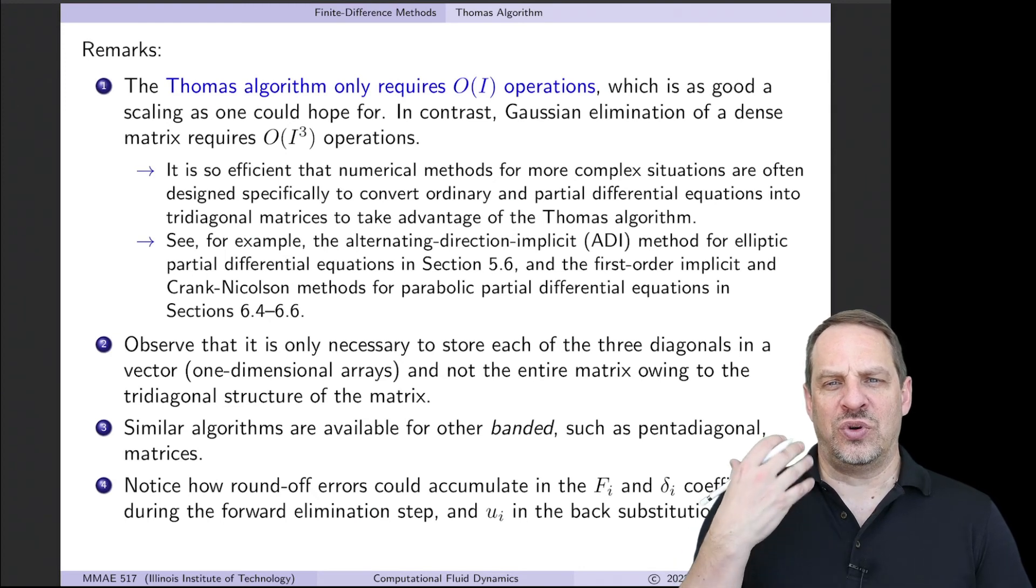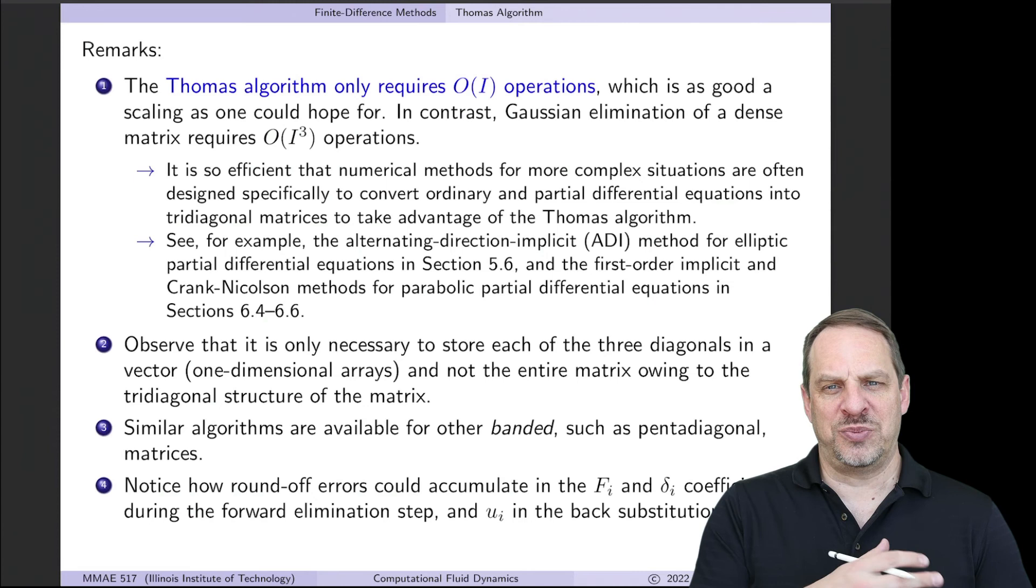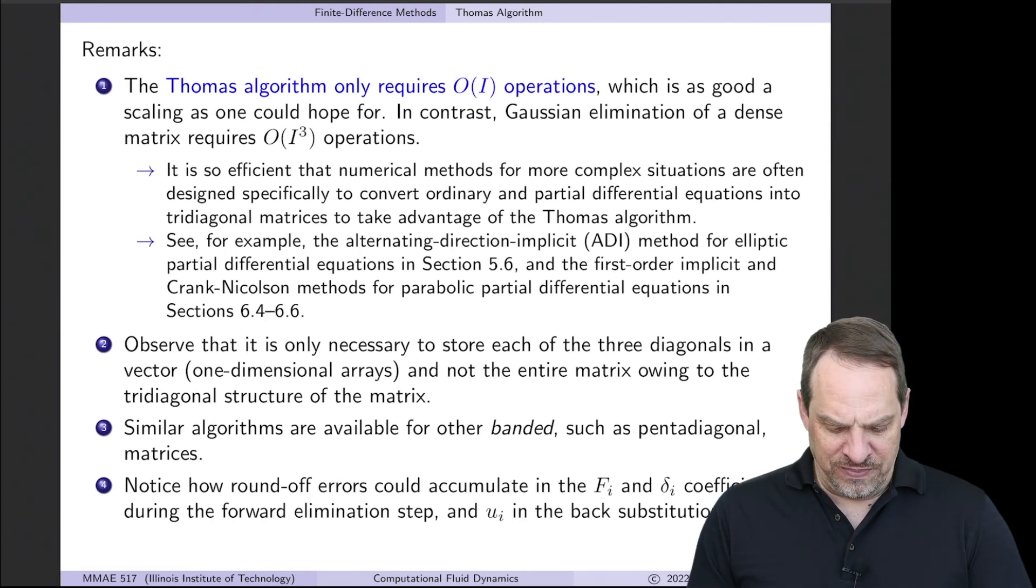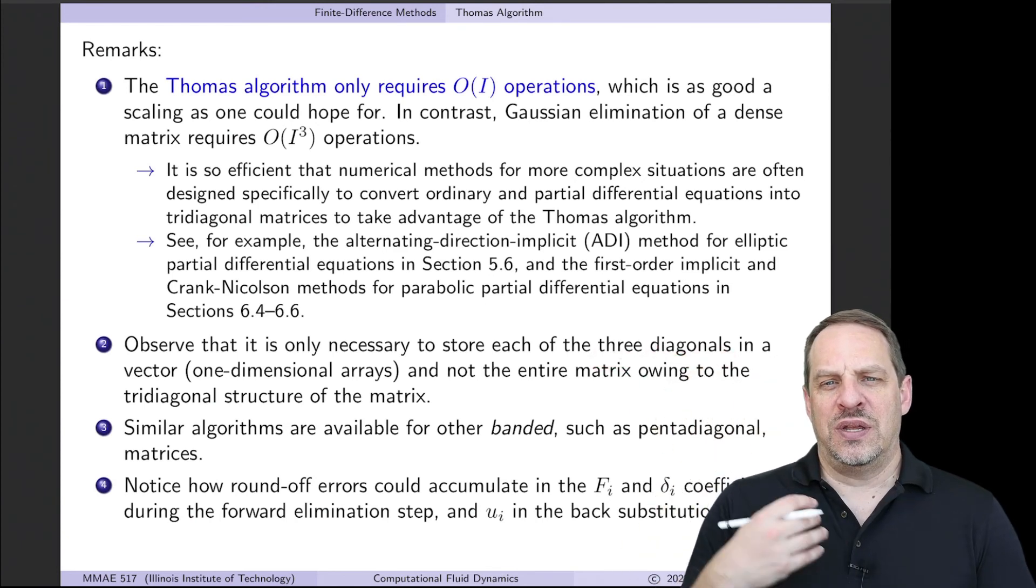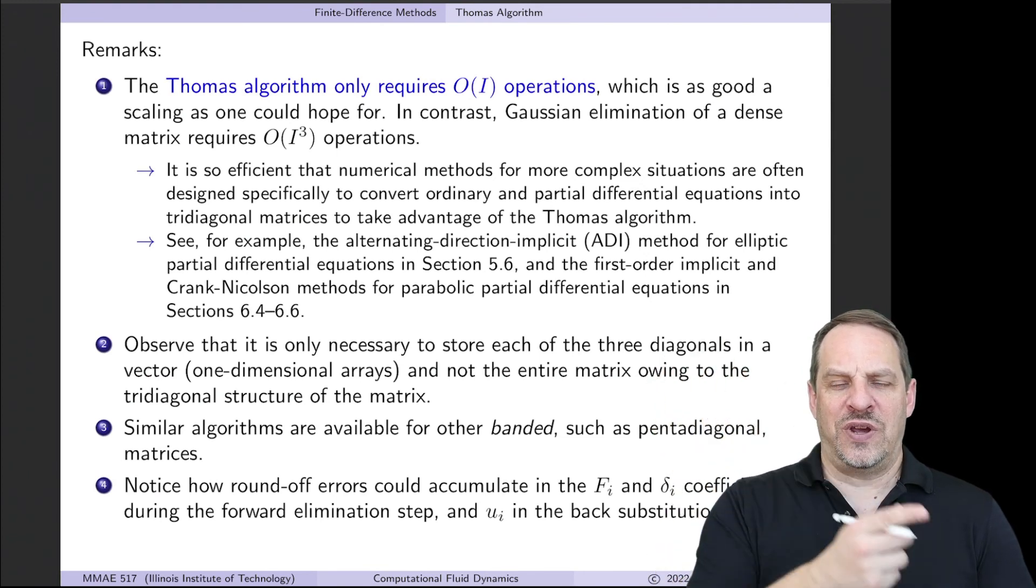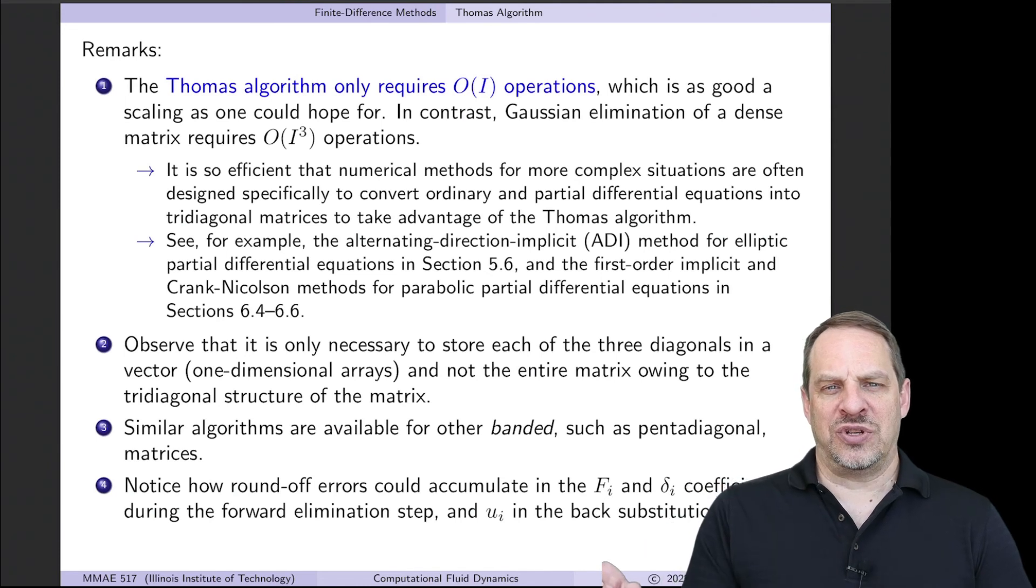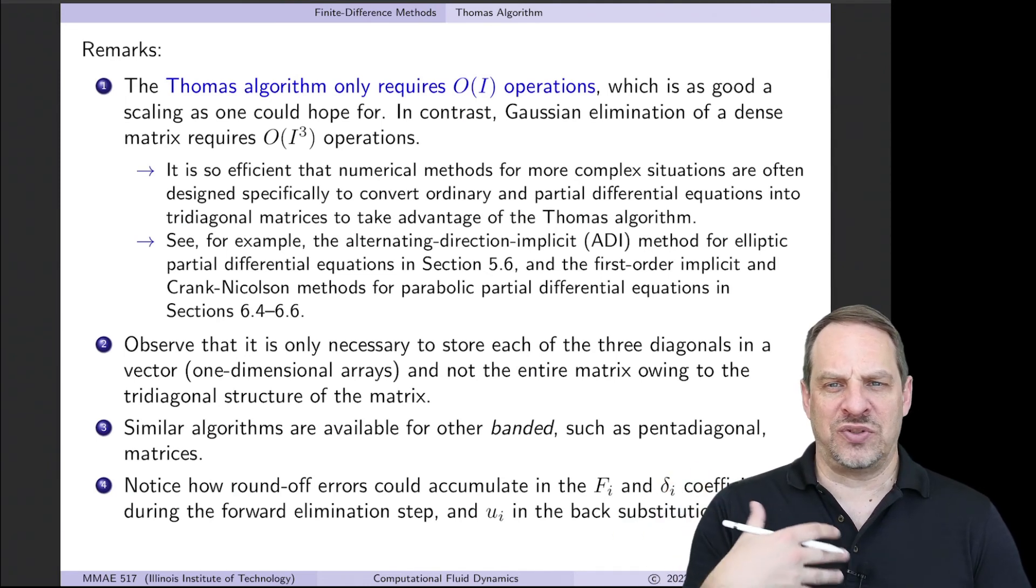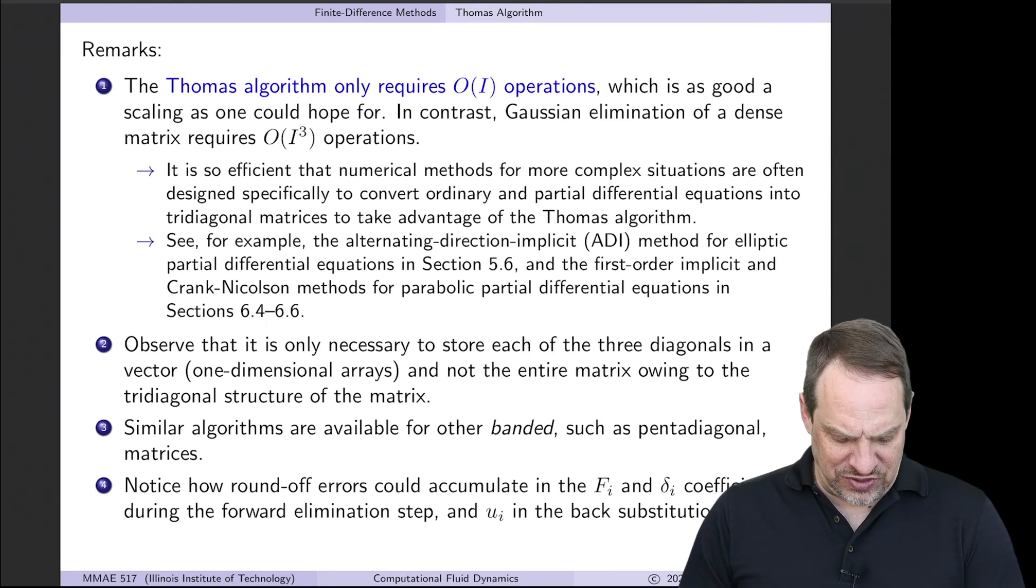In other words, rather than storing the whole entire matrix, all capital N by capital N elements, because most of them are just zeros, we can simply store the three diagonals, the A's, the B's, and the C's, as vectors, as arrays. So a vector array for A, vector array for B, vector array for C. Just fill up those three vectors and pass them to the Thomas algorithm. And the Thomas algorithm, that's all the information it needs. There's no need to store all those additional zeros.